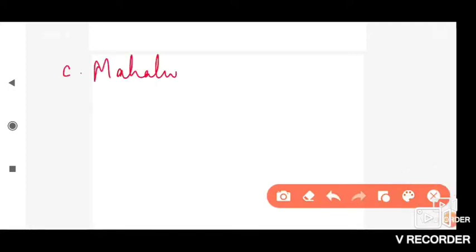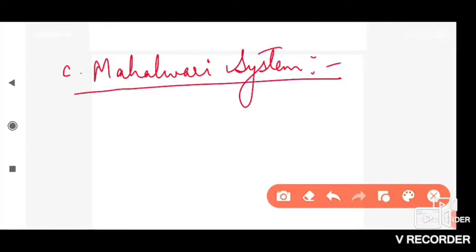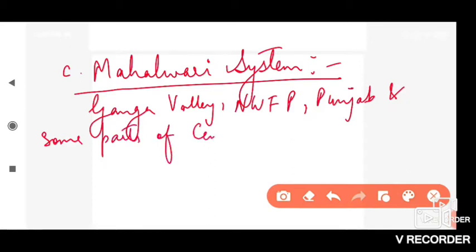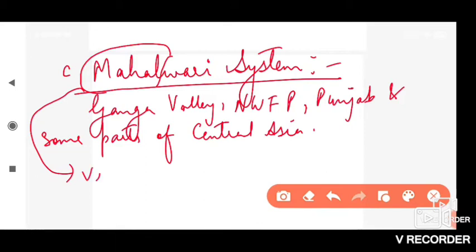The third economic cause was the Mahalwari System. It was introduced in the Ganga Valley, North-West Frontier Province, Punjab, and some parts of Central India. 'Mahal' means village, so here not just farmers or zamindars but the entire village would collectively pay taxes. This system was started by Lord William Bentinck.